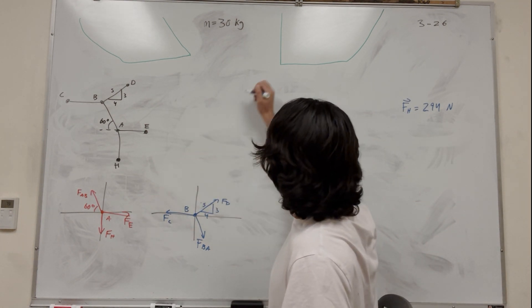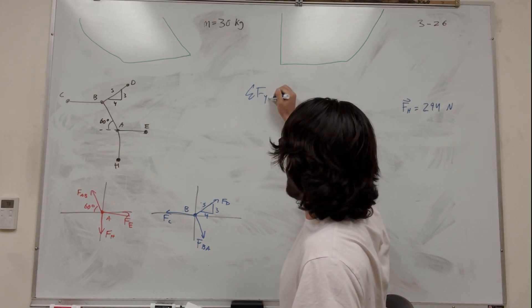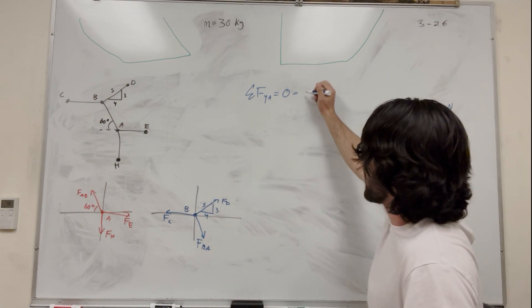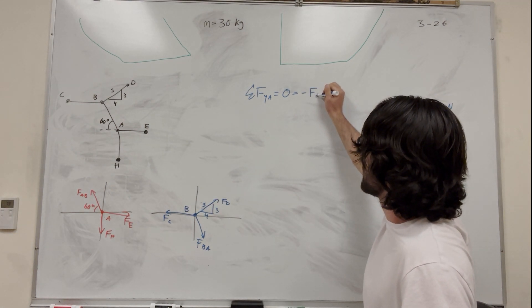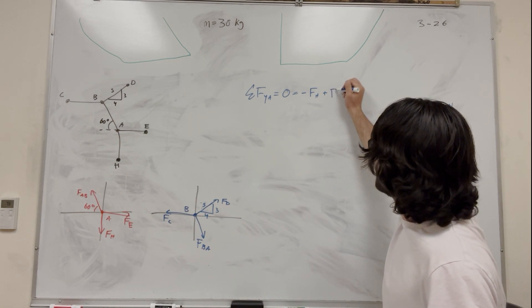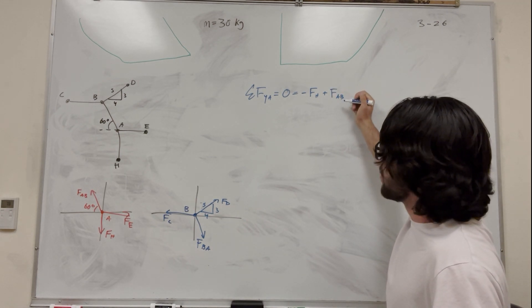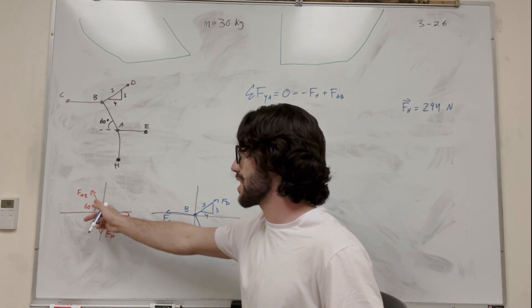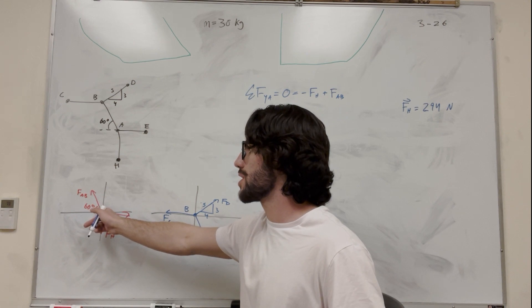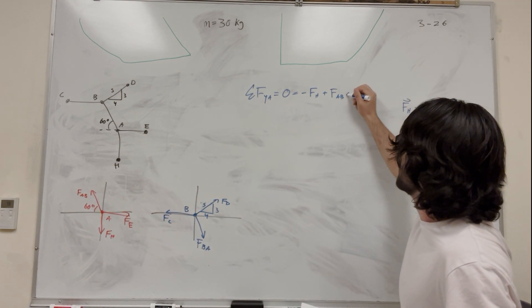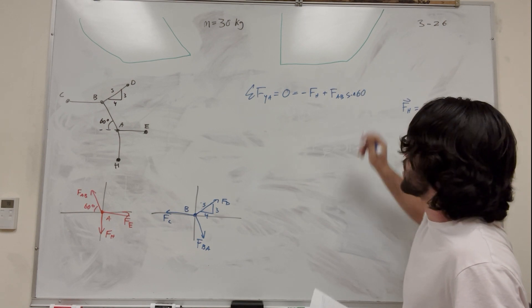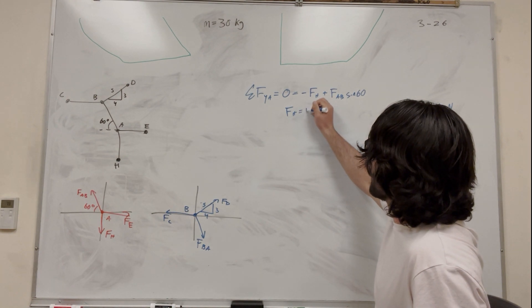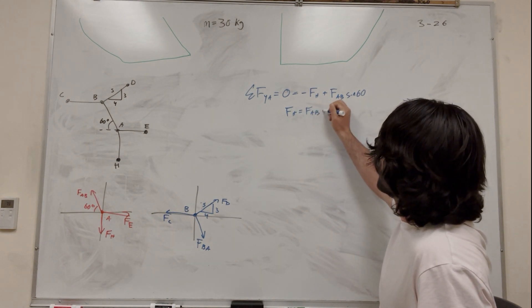So looking at A, sum of the forces in the Y direction at A, maybe, we can label that as going to be equal to zero. And let's do it. So force H is pulling down, it's going to be negative force H. And then we're going to be adding force AB. But force AB, we're not adding all of it. We're going to add just what's in the Y direction. So we're going to have to take this 60 and find what's in the Y direction. So if we use sine of 60, we're going to find the Y component.